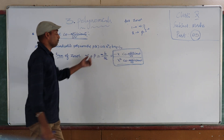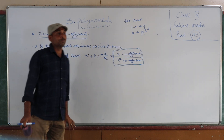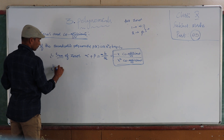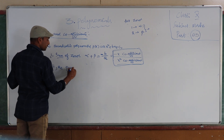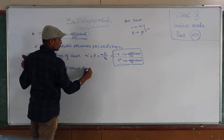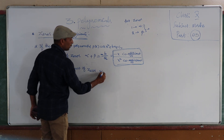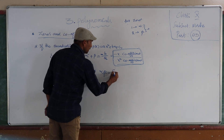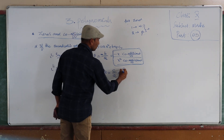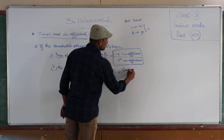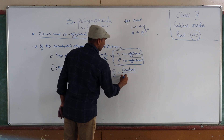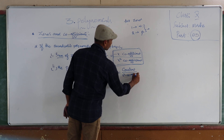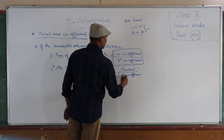The second condition is the product of zeros: alpha × beta = c/a, that is, the constant term divided by the x² coefficient.